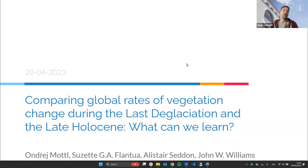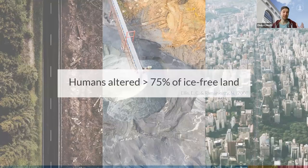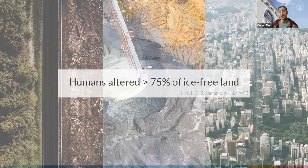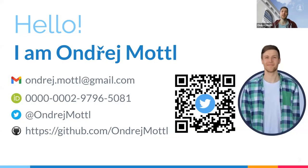I'll be talking about global rate of change, which has been a huge effort by multiple people. This talk was supposed to be given by Suzette, but she asked me to do it instead. My name is Oner Model, I'm a postdoc at the University of Bergen. Through the presentation there will be QR codes — you can do a print screen or use your phone — which will guide you to my Twitter account.